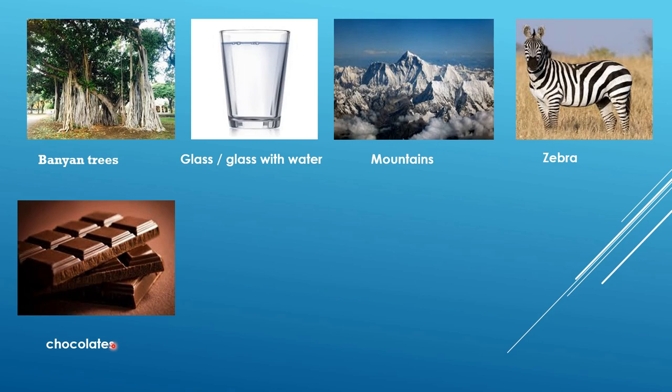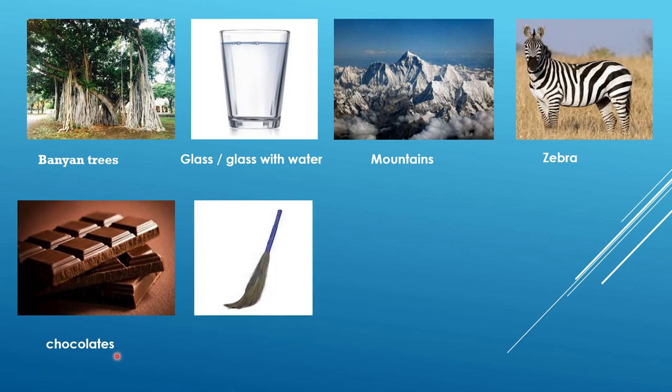Next is chocolate — c-h-o-c-o-l-a-t-e. If there is only one chocolate, say chocolate. If there is more than one, say chocolates — c-h-o-c-o-l-a-t-e-s. Don't forget the S for plural, otherwise you will lose marks.